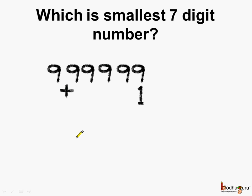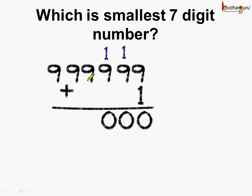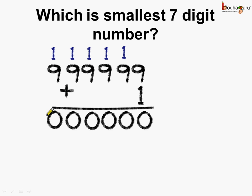Let's add 1 to it and what do we get? 9 plus 1 is 10, carry over 1. 9 plus 1 is 10, carry over 1. 9 plus 1 is 10, carry over 1. 9 plus 1 is 10, carry over 1, and we get 10 here.